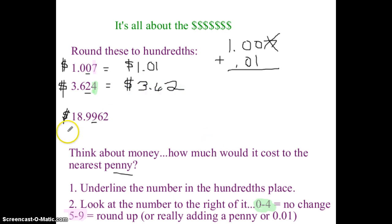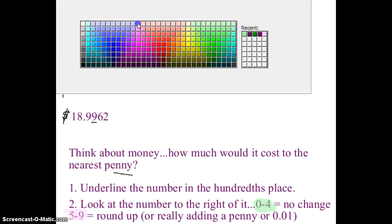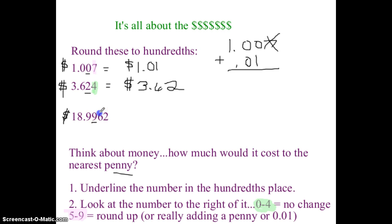All right. Now the last one. If you watched so far, keep watching because this is the one that people get wrong. So I have 18.9962. How much is that going to be? Well, I am going to look at this number and it's a six. So I'm going to round up. Okay. Or in other words, I'm getting rid of everything to the right of it and I'm adding a penny. Okay. So if something costs 18.99 and you add a penny, how much does it cost?